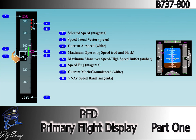Current airspeed is displayed on a tape and in a digital window on the left side of the PFD. The box around the digital window turns amber when airspeed is below minimum maneuvering speed. The current Mach number is digitally displayed below the airspeed tape when the current Mach number is greater than 0.4. The minimum speed that can be displayed is 30 knots. Target airspeed is displayed above the airspeed tape and also appears on the speed tape as a bug.